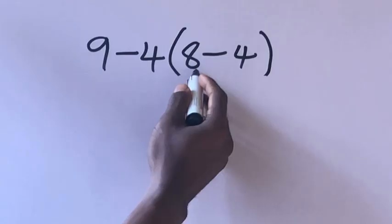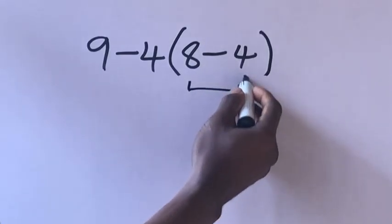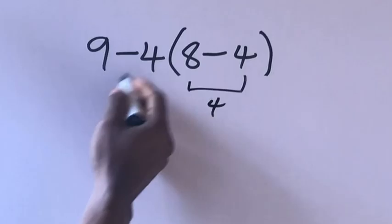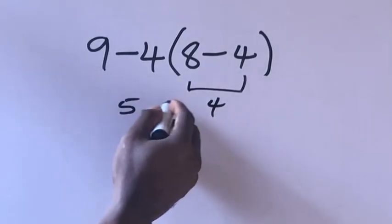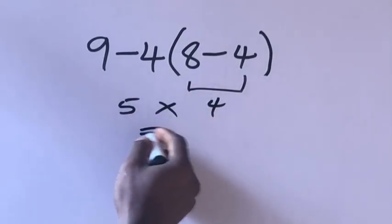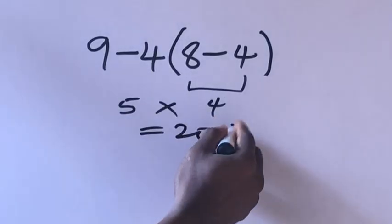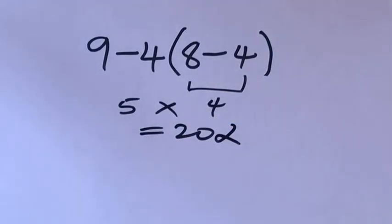9 minus 4 equals 5. 5 times 4 equals 20. But this answer is not correct.